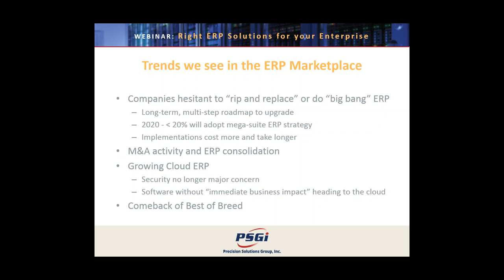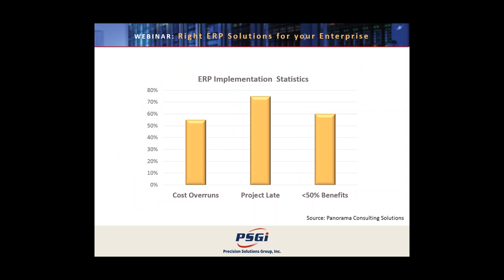Interestingly, some analysts are predicting that by 2020 — only four years away — less than 20% of multinational organizations are going to go for the big single-instance mega-suite ERP, which are definitely predominant today. It's no wonder that IT executives are reconsidering their strategies. ERP implementations continue to cost more and take longer than expected. Cost overruns are occurring at more than 53% of projects, lateness approaching 75%, and 60% of projects are achieving less than 50% of the benefits that were planned. Overall, satisfaction with ERP implementations is mixed at best.